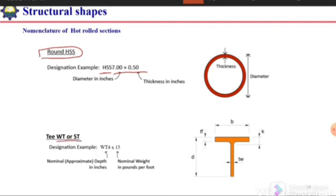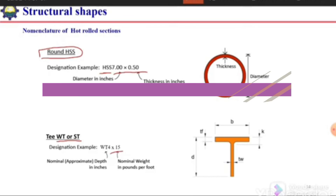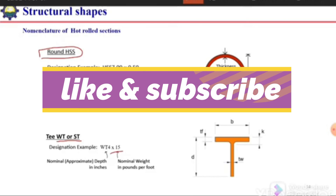For T sections, we use the designation WT or ST. If the T section is made by cutting a W section at the center, it is referred to as WT. If it is part of an S section, it is designated as ST. Both are followed by two numbers: the first indicating the depth and the second indicating the weight per unit length.